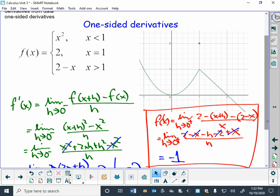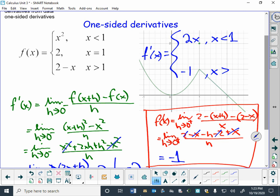And so if I wanted to overall write what the derivative of this function is, I would write that it is, what we discovered to the left is 2x when x is less than 1, and it's negative 1 when x is greater than 1.